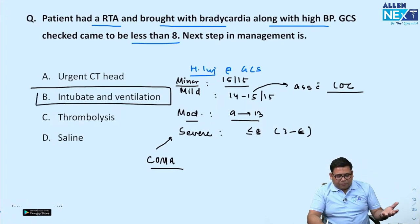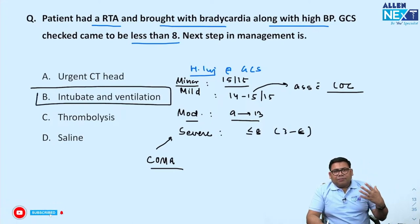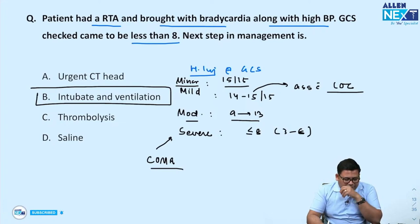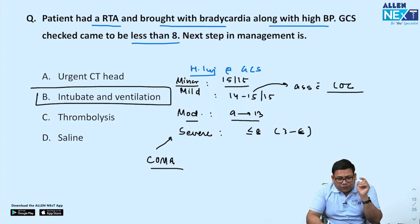That is the reason why any patient with GCS less than 8 requires urgent intubation and ventilation. CT can be done only when the patient is haemodynamically stable. Intubate the patient — this is very important.